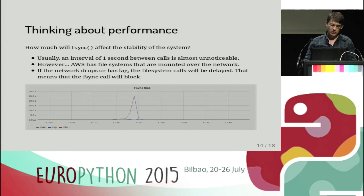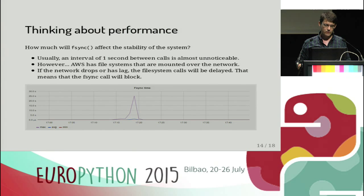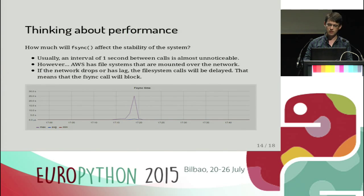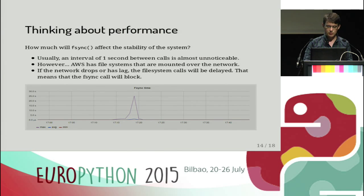There is another problem: we called fsync on the two essential data files and we used the network file storage offered by AWS. The fsync does affect the performance of file reads. We had a problem where periodically — once every two days or so — the network lagged in Amazon Web Services. That meant the fsync call went from under 0.1 seconds to almost 25 seconds, which meant the service was blocked at that time. But it was actually pretty rare and did not affect the system too much.